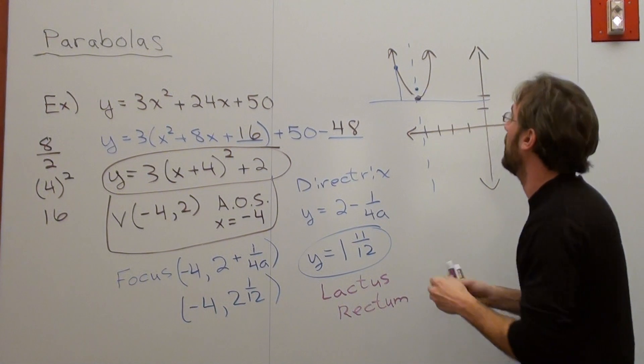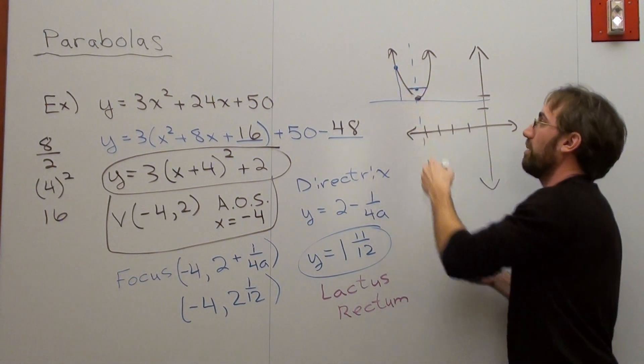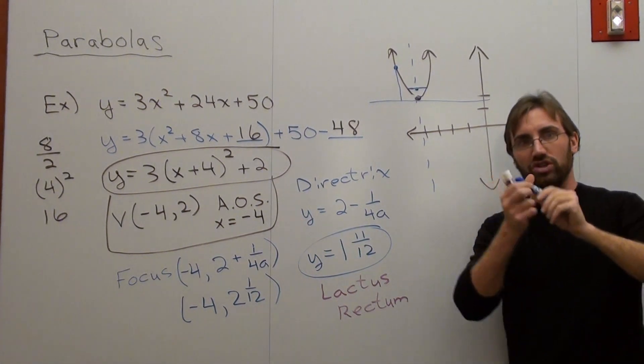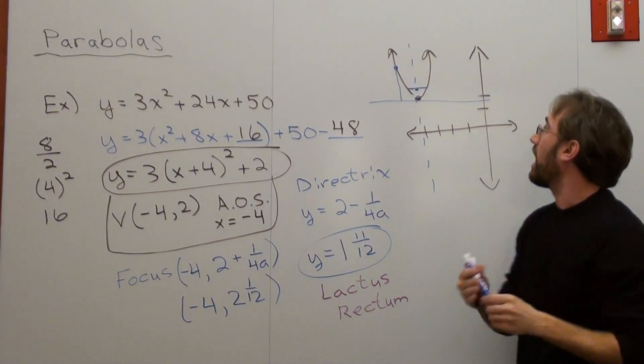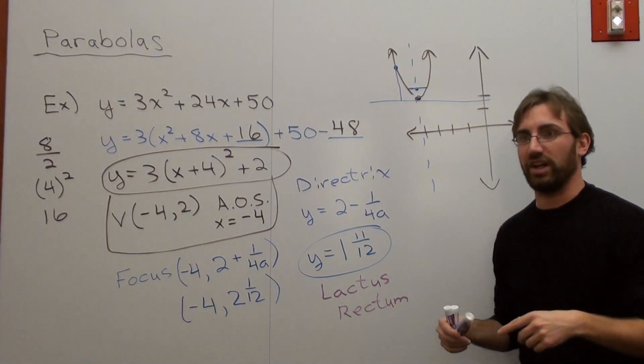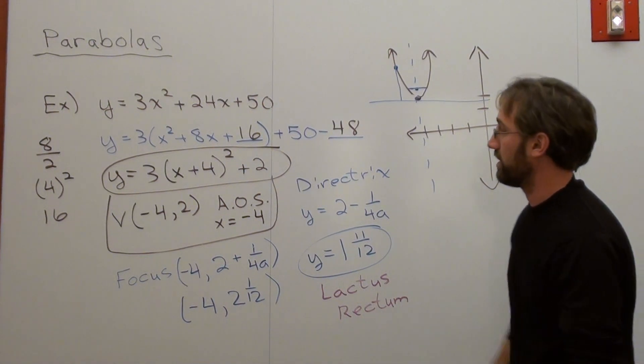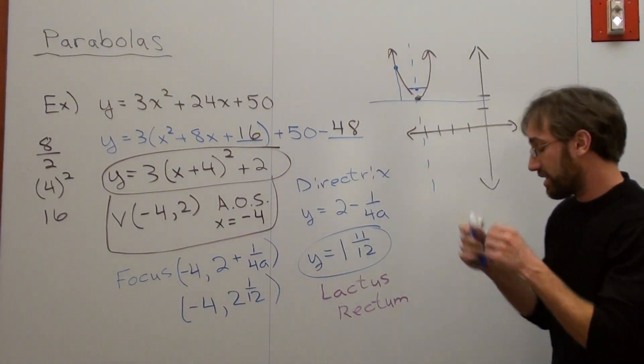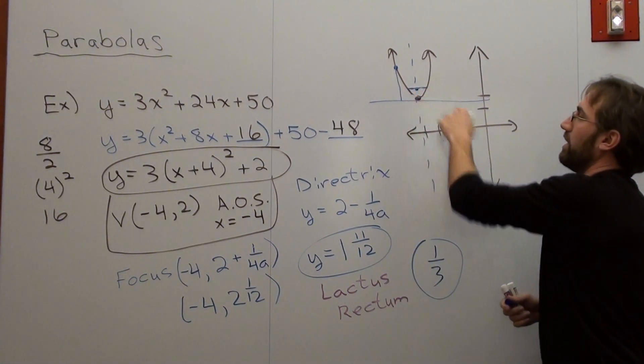And the latus rectum is the length of the line that crosses through the focus to the parabola. So wherever the focus is, you draw a straight line or it would be a vertical line if the graph were like this. And the length of that is one over the absolute value of a because when we're talking about distance, it's got to always be positive. Well, the a value is three. So the length of the latus rectum is one third. And that's the blue line right there.